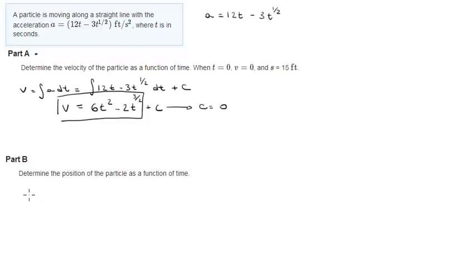We're going to do part B which is very similar. You know that the position is the integral of the velocity over time plus C, which means that this is the integral of 6t squared minus 2t to the 3/2 over time plus C.